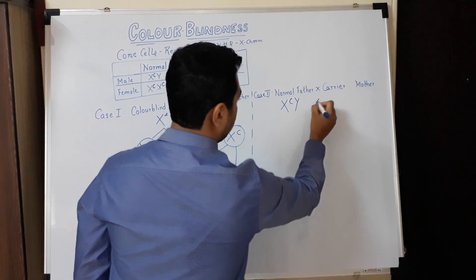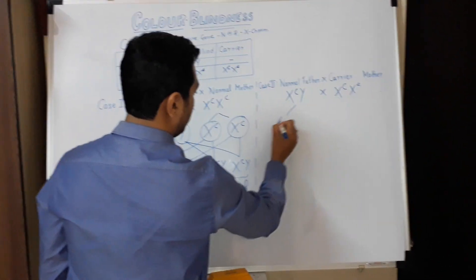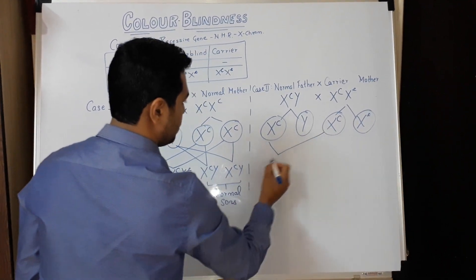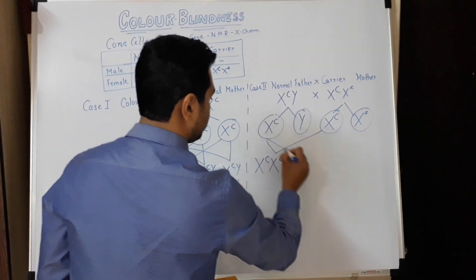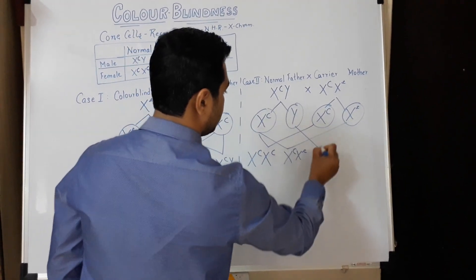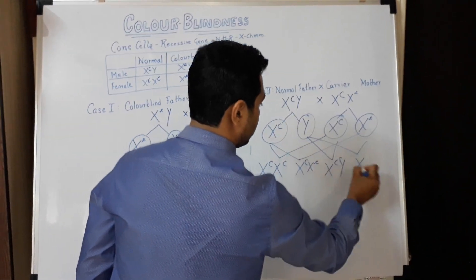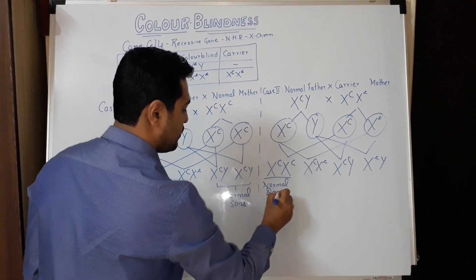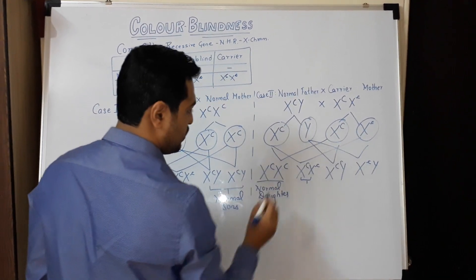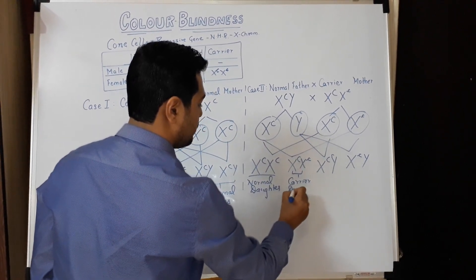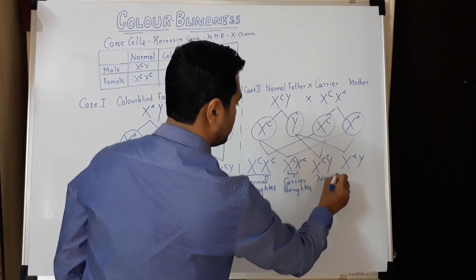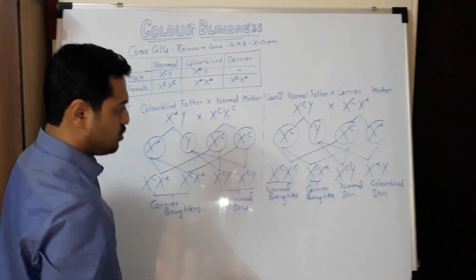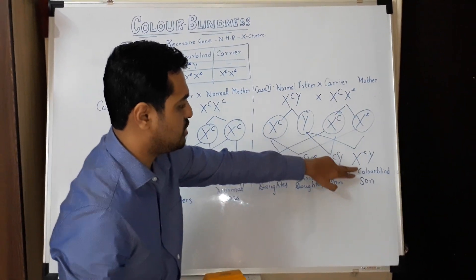In Case 2, the normal father is represented as X capital C Y, and the carrier mother as X capital C X small c. The gametes formed are X capital C, Y from the father, and X capital C, X small c from the mother. The offspring are: X capital C X capital C (normal daughter), X capital C X small c (carrier daughter), X capital C Y (normal son), and X small c Y (colorblind son). One daughter has both dominant genes — she is a normal daughter. One daughter has one recessive gene — she is a carrier daughter with normal vision. One son is normal, and one son suffers from colorblindness, having received the recessive gene from the mother.